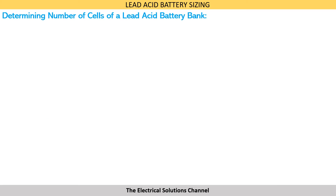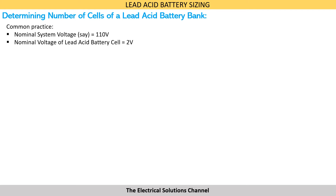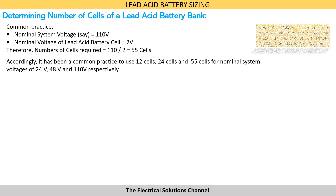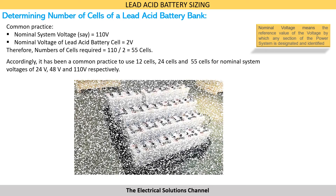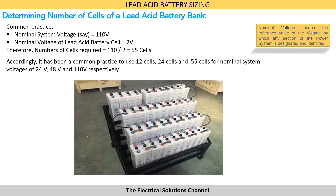Let us now understand how to calculate the number of cells of a battery bank. Let us consider nominal system voltage is 110 volts. Since the nominal voltage of a lead acid battery cell is 2 volts, the number of cells required for this system is 110 volts divided by 2 volts, which equals 55 cells. Accordingly, it has been common practice to use 12, 24, and 55 cells for nominal system voltages of 24 volts, 48 volts, and 110 volts respectively.